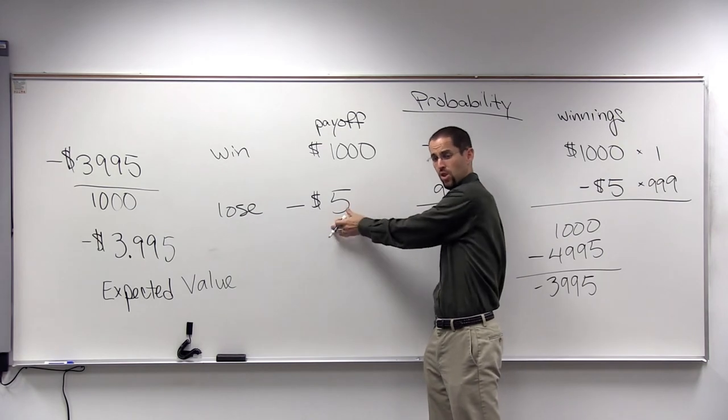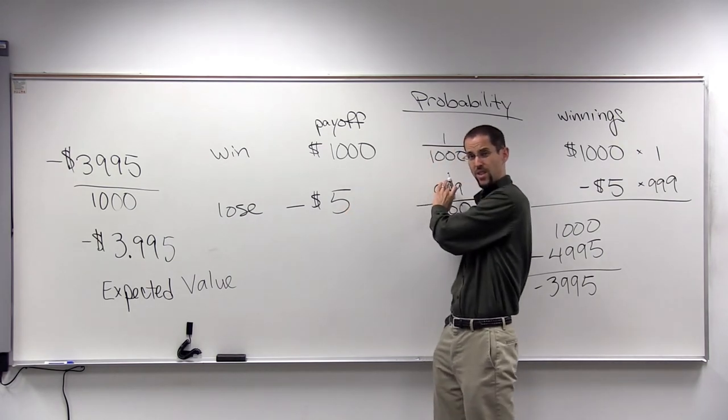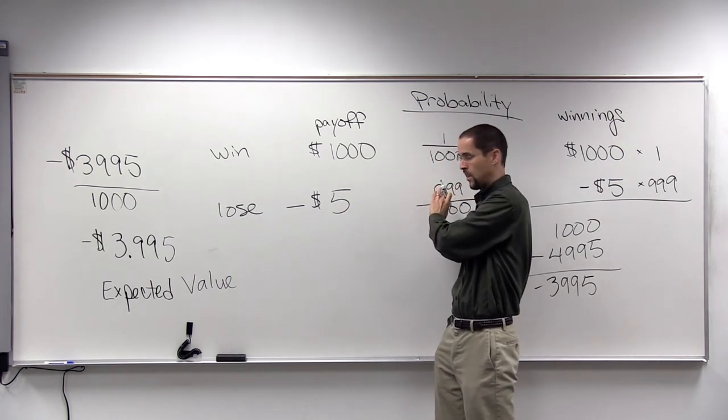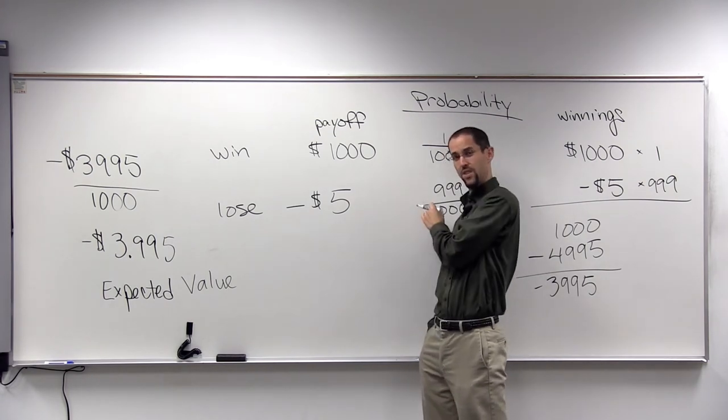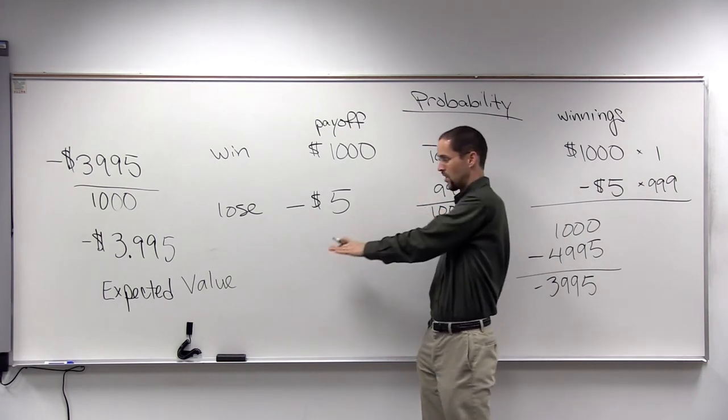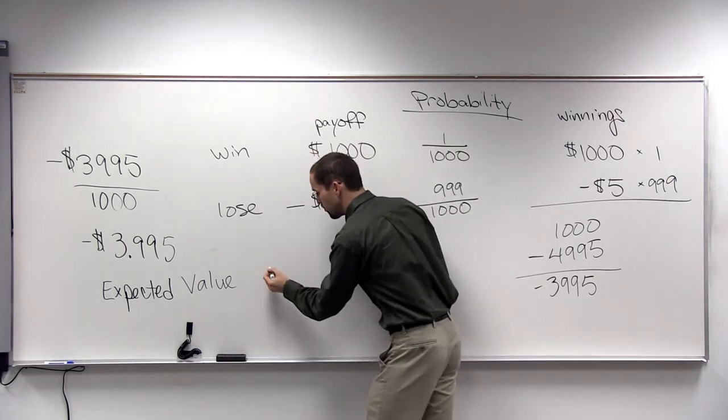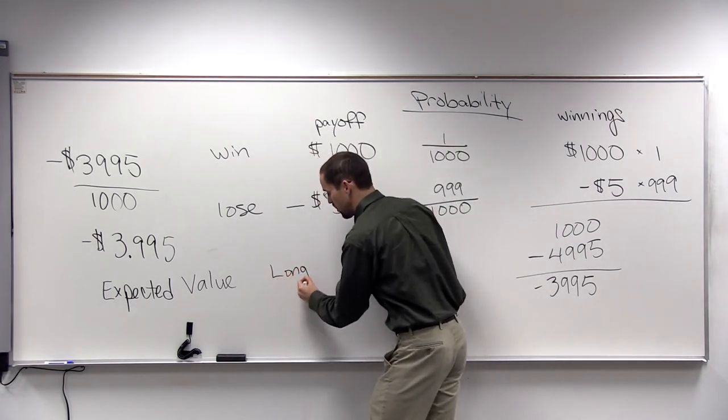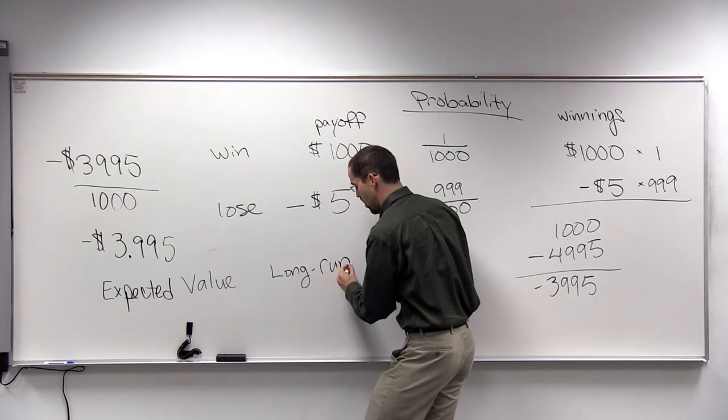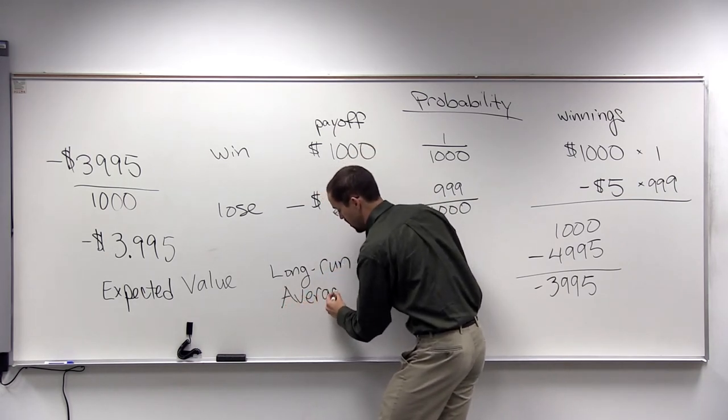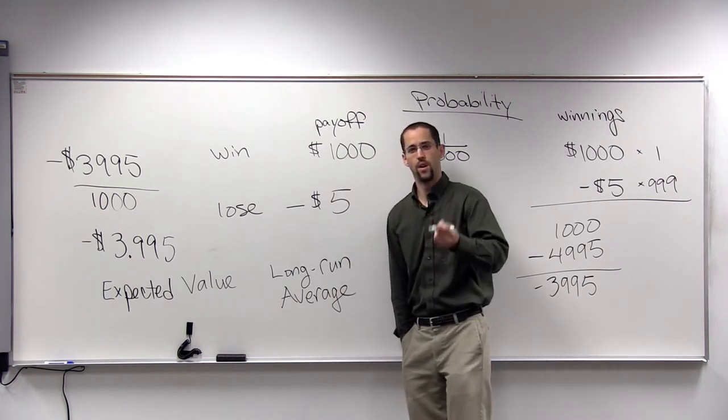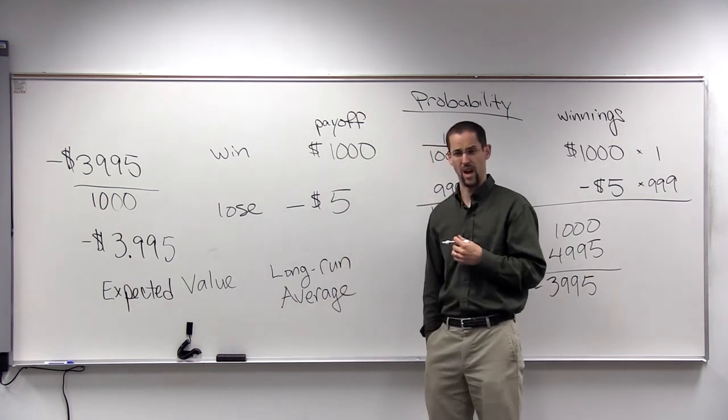Each individual time you're losing $5 or winning $1,000. That's not what expected value looks at. It doesn't look at individual times you played. Expected value is, more properly, a long run average. If you do it over and over and over again. Thousands of times.